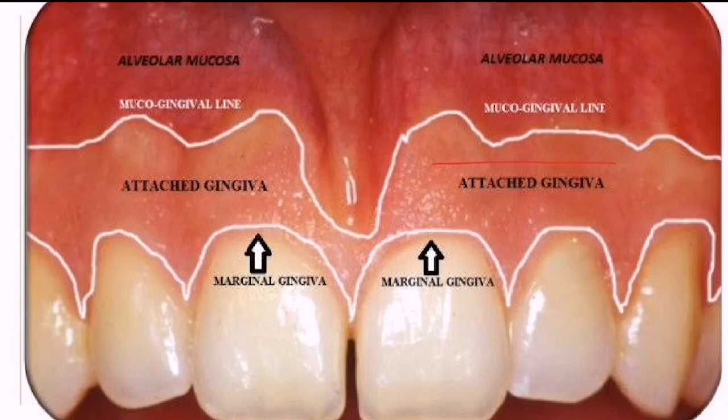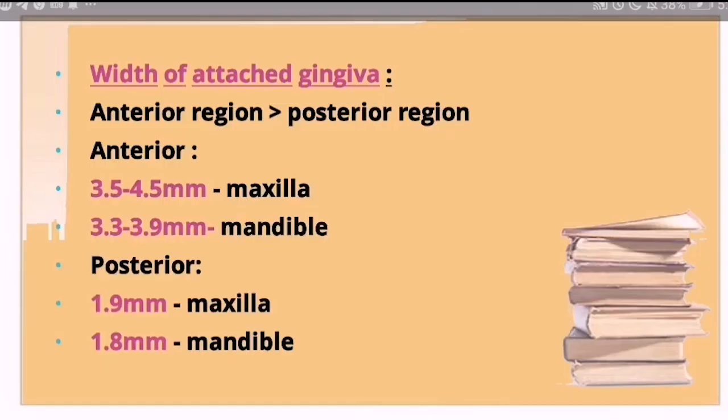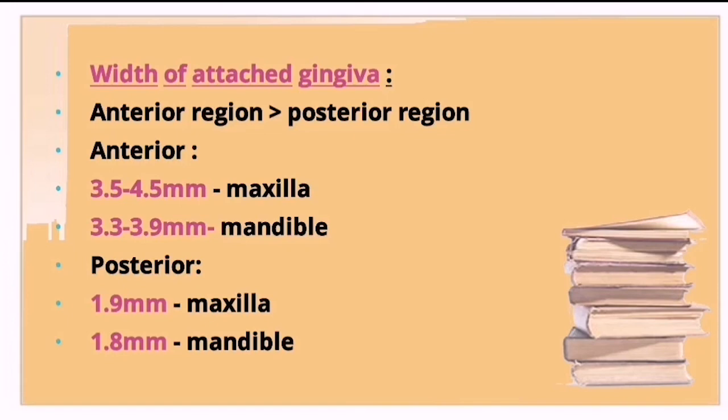In this picture, you can see the free gingival groove separating the marginal gingiva from the attached gingiva, which extends from the free gingival groove up to the mucogingival junction. The width of attached gingiva is a very important viva question — it is always greater in the anterior region compared to the posterior region, in both the maxilla and mandible.